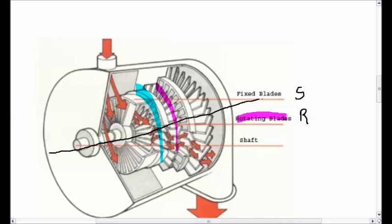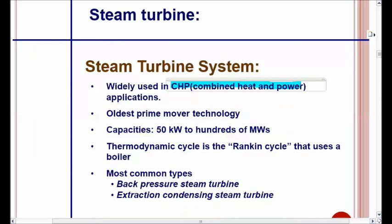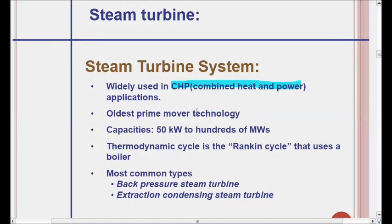In the middle of the fixed and rotating blades there is a central axis called the shaft of the turbine. This shaft is coupled with the generator, which converts the rotary motion into electrical energy. A widely used steam turbine system is the CHP type, also called Combined Heat and Power, which is also known as a co-generational type steam turbine system.